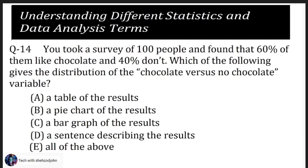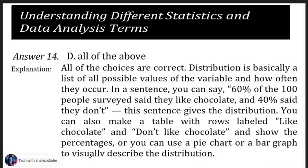Question 14: You took a survey of 100 people and found that 60 percent of them like chocolate and 40 percent don't like chocolate. Which of the following gives the distribution of the chocolate versus no-chocolate variable? Choice A: a table of the result. Choice B: a pie chart of the result. Choice C: a bar graph of the result. Choice D: a sentence describing the result. Choice E: all of the above.